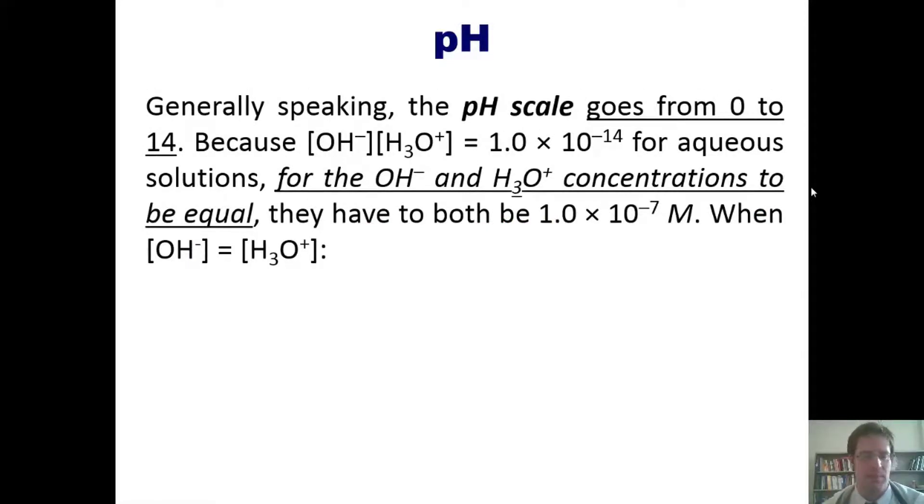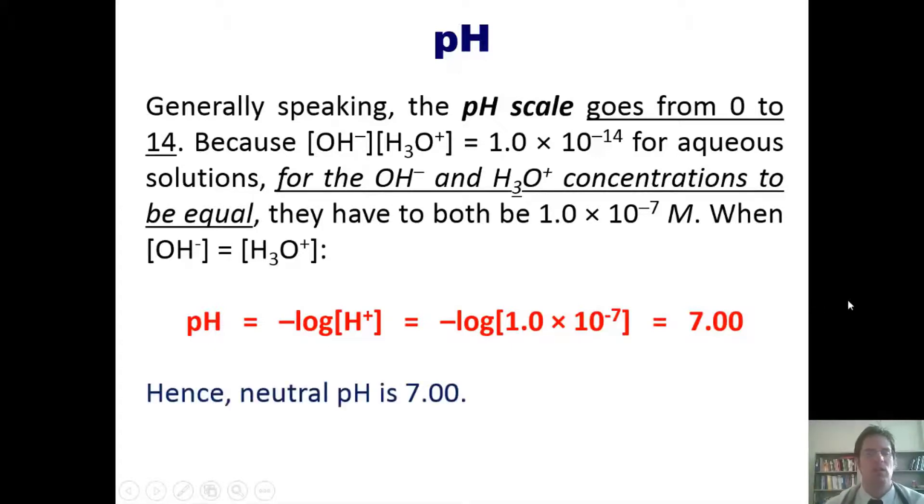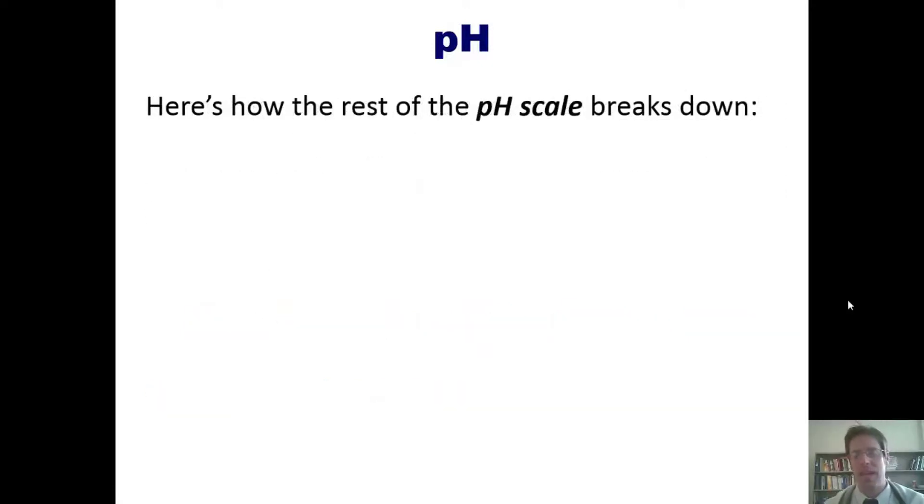Please remember once again that H+ and H3O+ are sort of the same thing. Generally speaking, the pH scale goes from 0 to 14. Because the concentrations of base and acid equivalents multiplied together in an aqueous system equals this number, for the hydroxide and H3O+ concentrations to be equal at a neutral solution, they both have to be 1 times 10 to the negative 7th molar. When the hydroxide concentration equals the hydronium concentration, then pH equals the negative log of H+, which is the same as the negative log of 1 times 10 to the negative 7, which comes out to be 7. Hence, neutral pH is 7.